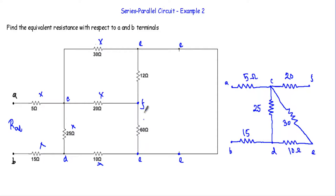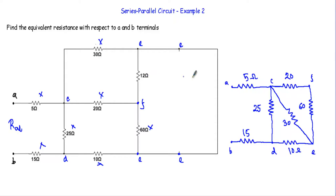If I want to go from E to F, I will encounter a resistance of 60 ohm. Between F and E I also have another resistor of 12 ohm. I have to calculate the resistance between the A and B terminals.